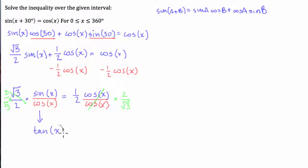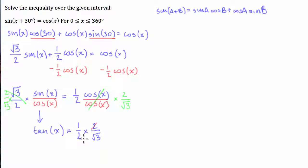Sine x over cos x is equal to tan of x — I've explained why in another video. So tan of x equals one half times 2 over square root 3. We can simplify across the diagonals: the 2s simplify to 1, giving us 1 times 1 over 1 times square root 3, which is just 1 over square root 3. So we're left with tan of x equals 1 over square root 3.